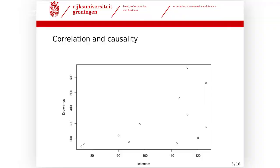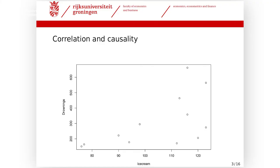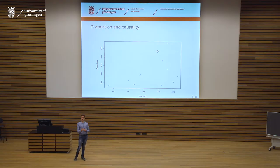Before we go to the actual question of interest, let's look at a figure. On the horizontal axis we have ice cream production in the US in 2018 — actual data — and on the vertical axis the number of drownings in the US. It's monthly data. What we see is that when ice cream production increases, we also see an increased number of drownings — a cluster of points where we have high ice cream production and many drownings.